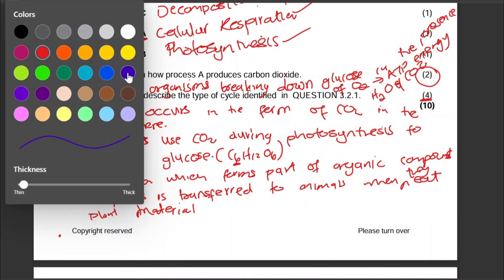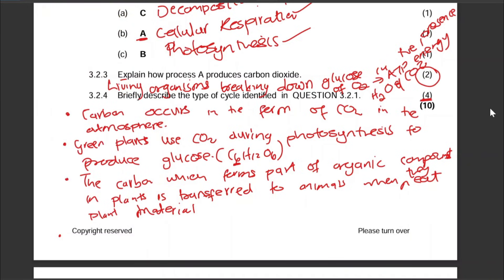Let me show you how it's marked: carbon occurs in the form of carbon dioxide in the atmosphere — yes; green plants use carbon dioxide during photosynthesis — yes; to produce glucose — yes; and when you speak about plant materials being transferred to animals — that is also fine. Any four points from the ones I've mentioned will earn your marks.